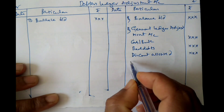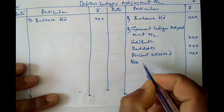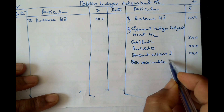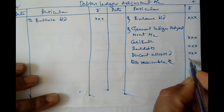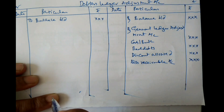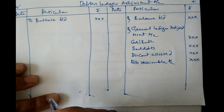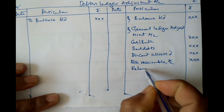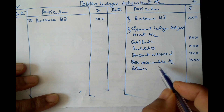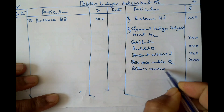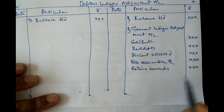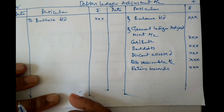There may also be bills receivable received during the year. These new bills received from debtors must be taken to the credit side. Apart from these items, there may be returns — Returns Inwards, meaning sales returns. That must also be taken to the credit side of this account.